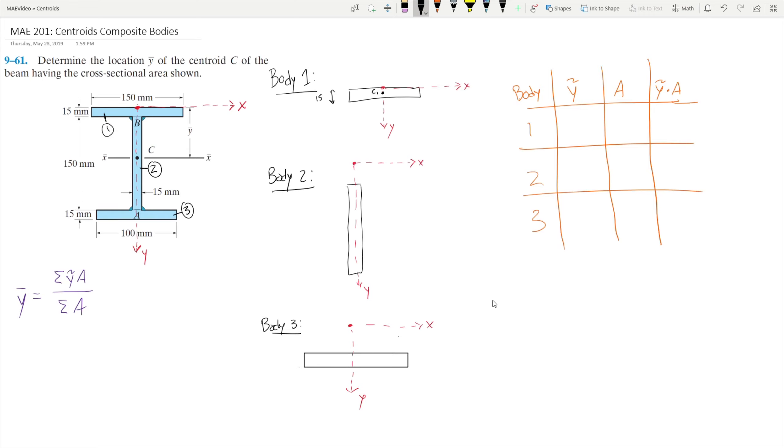Let's go ahead and write that in our table here. The area of this body is just 15mm times 150mm, since this length here is 150mm. So the overall area is going to be 2250mm squared. If we multiply our y-tilde by our area, we get a value of 16,875mm cubed.